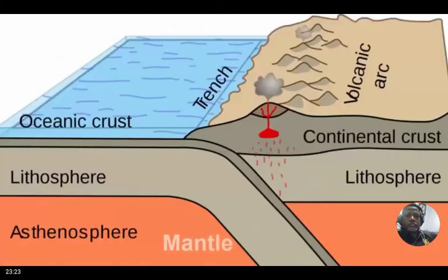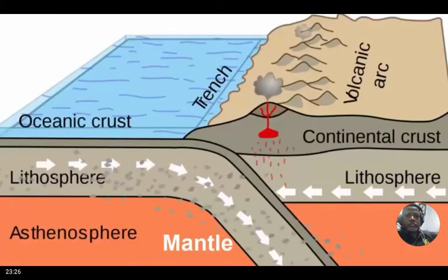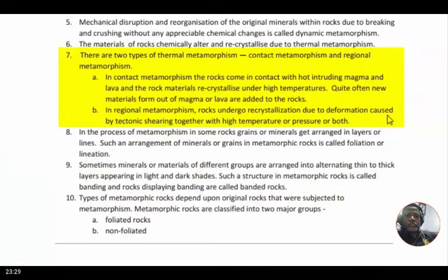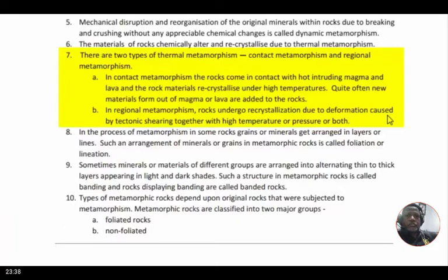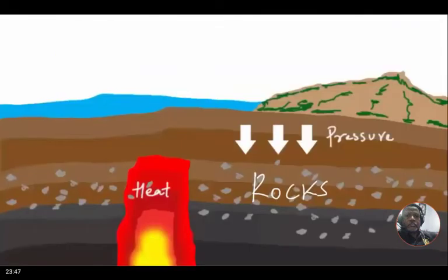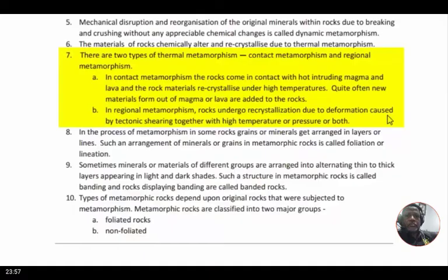Under thermal metamorphism there are two types: contact metamorphism and regional metamorphism. Contact metamorphism refers to where rocks come into direct contact with hot magma and lava, which melts and recrystallizes them in a different form. In regional metamorphism, the rocks do not become molten in order to change — they just need incredible pressure of the landform above and high temperature, but the rock need not melt. Contact means in direct touch with magma; regional means around the magma, where the heat does the transformation.